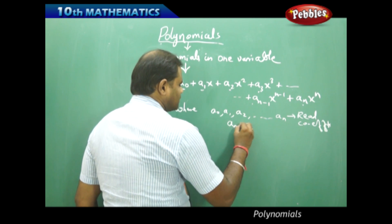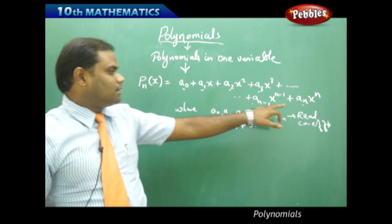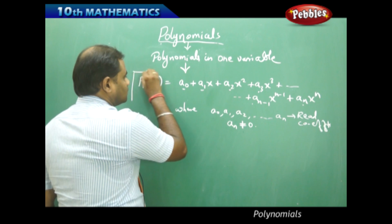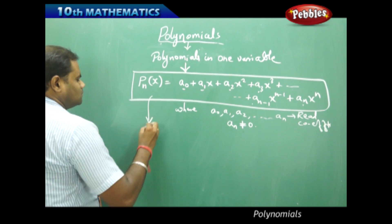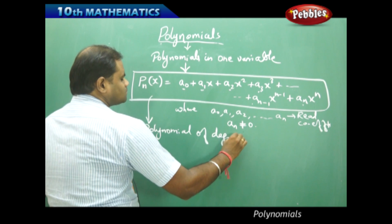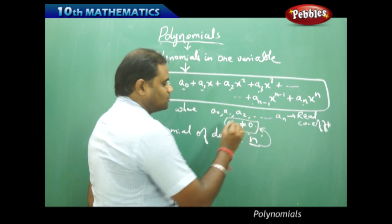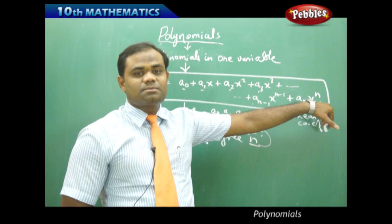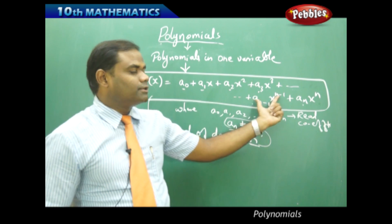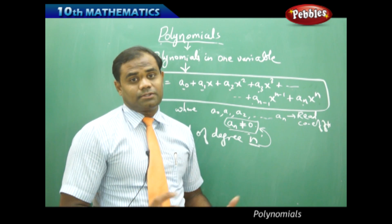Also, an is not equal to 0, because if an equals 0 then the polynomial reduces by one degree. This is called a polynomial of degree n, and the degree requires that an is not equal to 0. If an equals 0, the x to the power n term vanishes and the highest power becomes n minus 1. Therefore, the degree of a polynomial is the highest power to which the polynomial is raised.